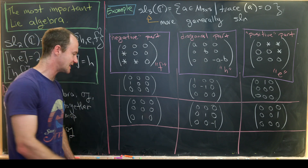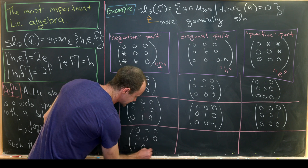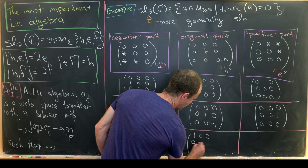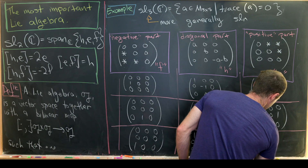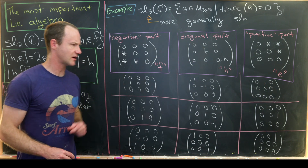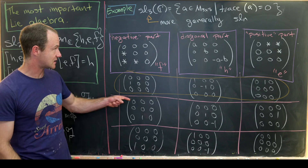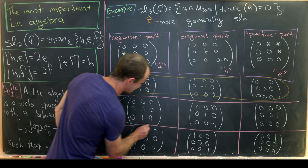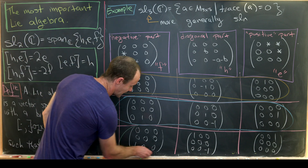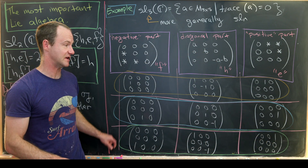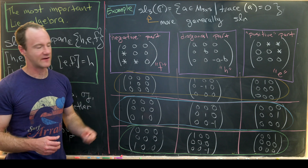We now have two copies of SL2 within SL3 and can get one more. The third copy is spanned by: f being the matrix with a 1 in position (3,1); h being diag(1,0,−1); and e being the matrix with a 1 in position (1,3). Taking the span of these three matrices gives a copy of SL2 inside SL3. This picture gives you an idea of how to generalize to SL4, SL5, or in general SLN — you get many copies of SL2 in a general SLN.